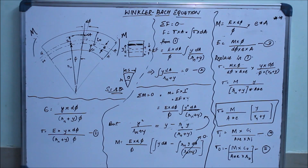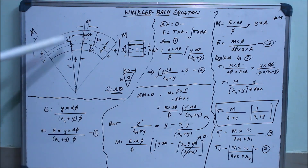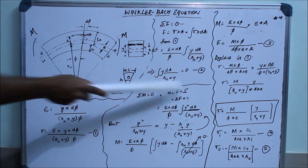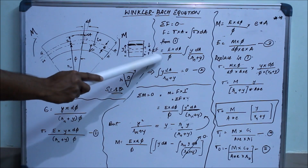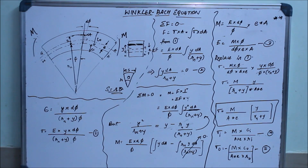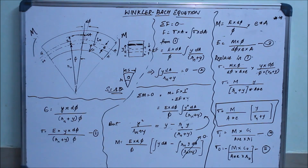Coming to the second condition — sum of all moments equals zero. Moment equals force times perpendicular distance, so sigma times y. We substitute the expression for sigma from equation 1, and multiply by y, so y becomes y² here. This gives us the equation for moment.